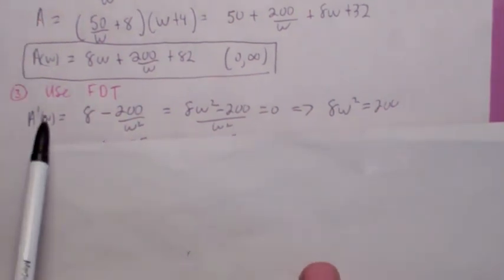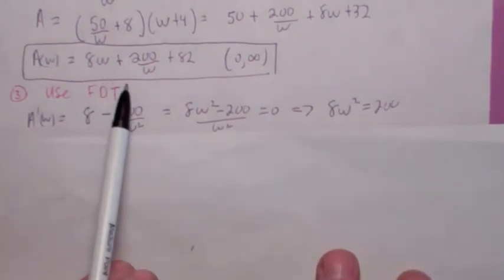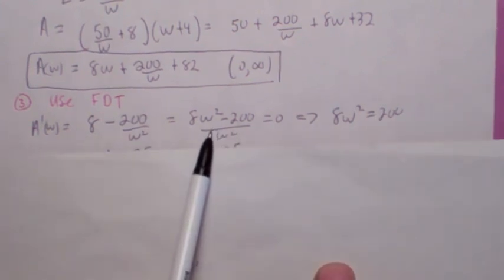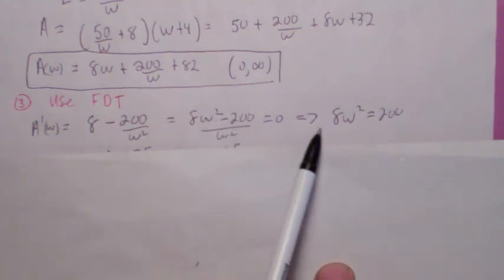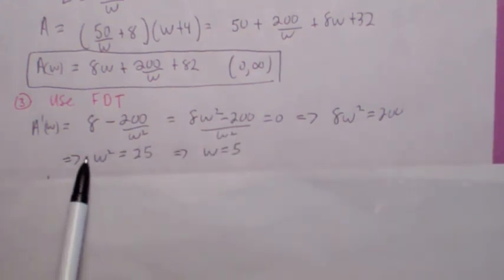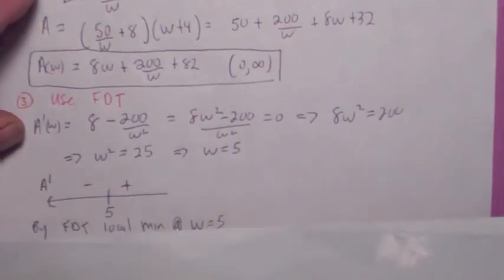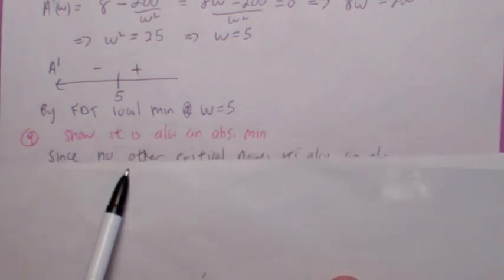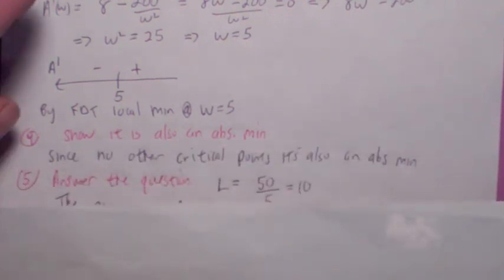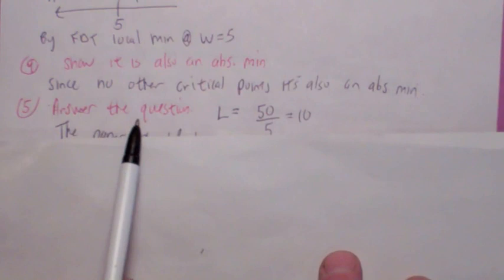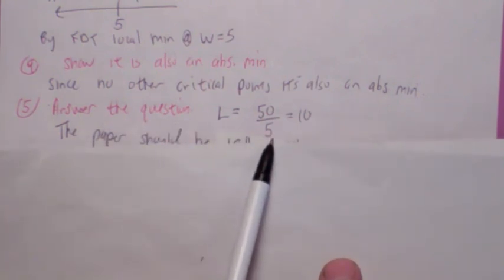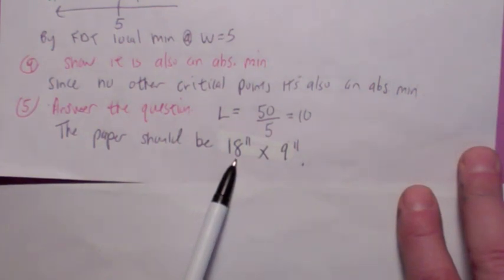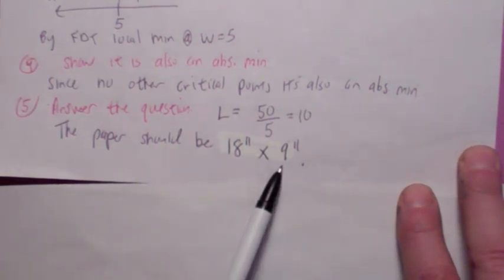Taking the derivative of A gives 8 minus 200 over w squared. Getting a common denominator and setting the numerator equal to zero gives w equals 5, since w must be greater than zero. The sign chart confirms a local minimum at w equals 5, and since there are no other critical numbers it is an absolute minimum. With w equals 5, l equals 50 over 5 which is 10. The final dimensions of the paper are l plus 8 equals 18 inches by w plus 4 equals 9 inches.